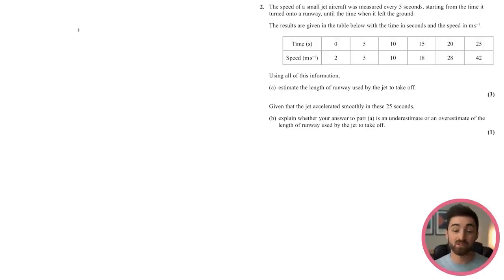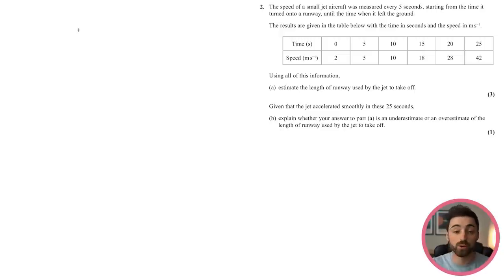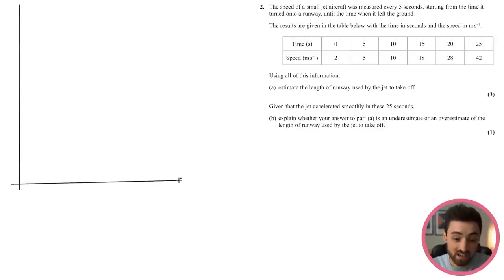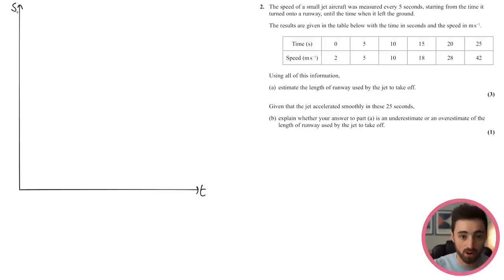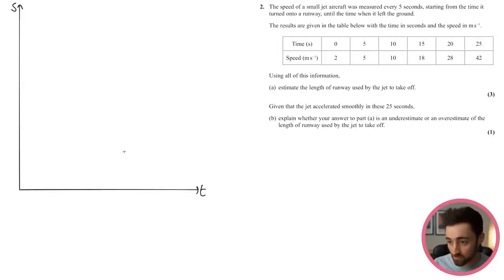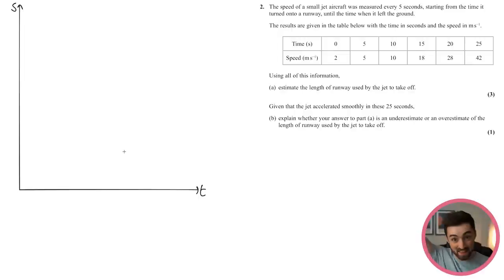We're given time and speed. If I plot speed against time, the area under that graph represents the distance travelled, which equals the runway length. Let me do a rough sketch — time on the horizontal axis, speed on the vertical. Plotting the data points: in the first 5-second interval it goes up by 3, then 5, then 8, then 10, then 14. It's almost exponential — accelerating slowly then going quicker.